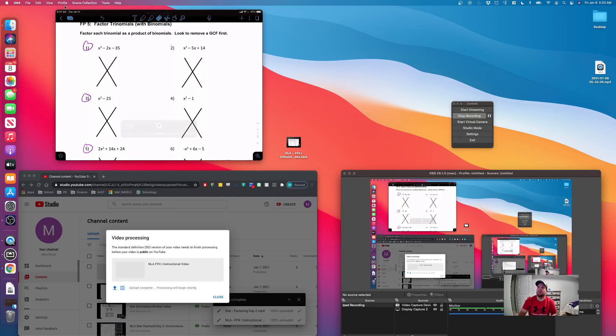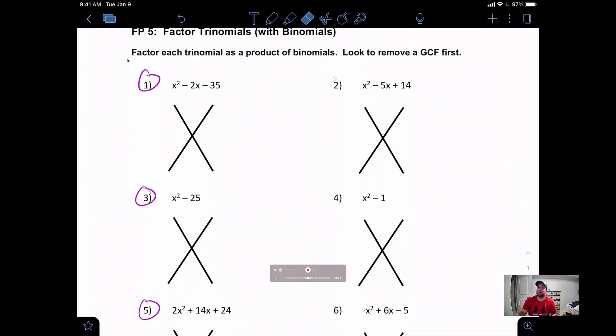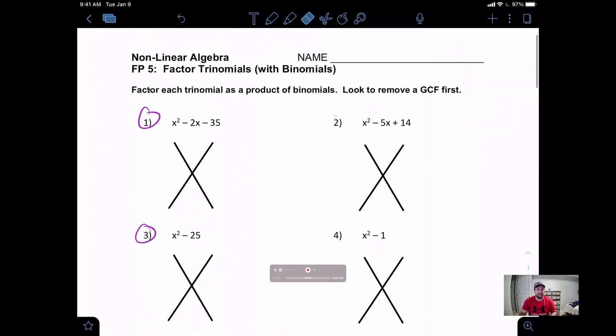Alright guys, welcome back. Today we're going to start talking about FP5, which is factoring trinomials with binomials. The directions say factor each trinomial as a product of two binomials. Look to remove a greatest common factor first if possible. Not every problem is going to be able to pull out a greatest common factor, but as we learned in FP4, that greatest common factor and pulling that out first is very important.